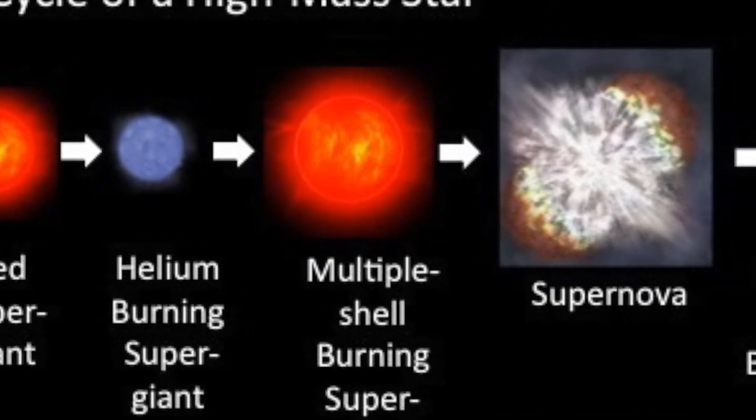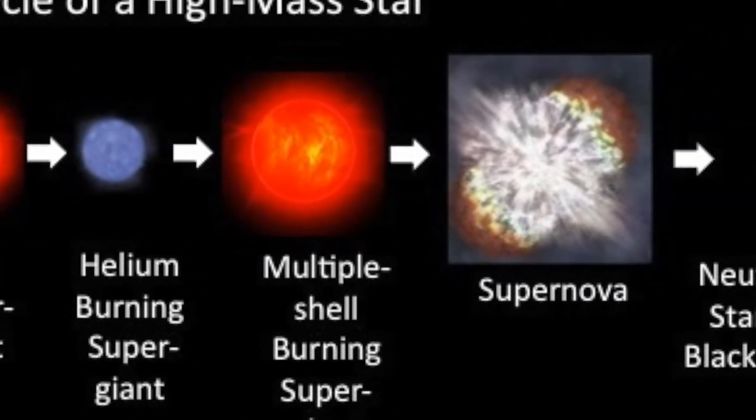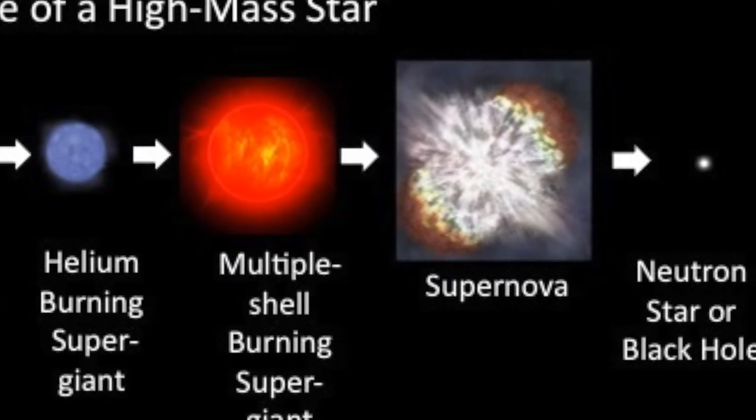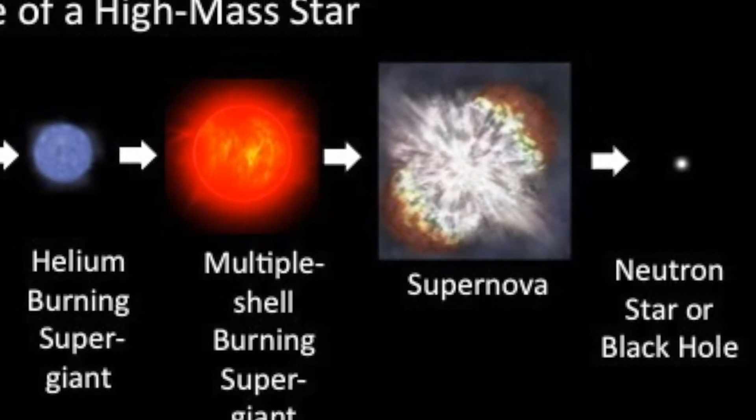The core collapses and forms a ball of neutrons, or it can collapse further and create a black hole.